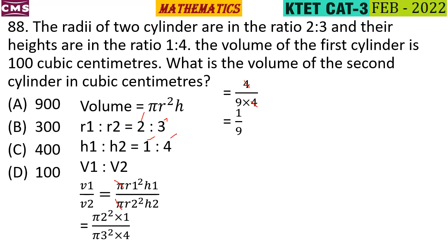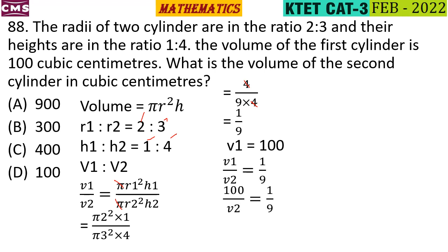V1 by V2 is 1 by 9. V1 is 100. So 100 by V2 equals 1 by 9, therefore V2 equals 900 cm³. Option A.